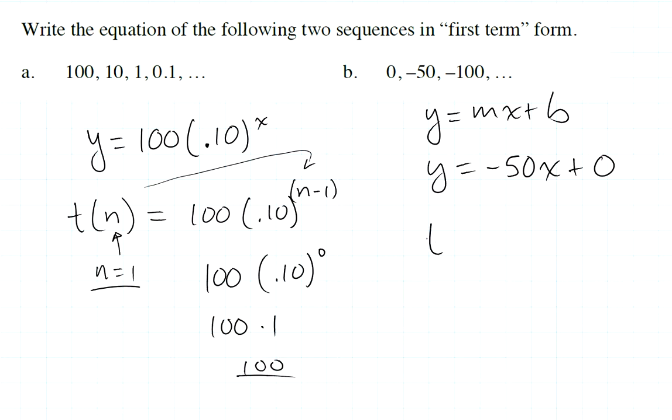If I write this in first term form, when N is 1, it should produce a value of 0. And you can see it won't. If I put in X as 1, it's going to give me negative 50. So if I want to shift this over to first term form, it's going to be that negative 50 again. But this time, N minus 1. So you can see here, when I want to go to my first term form, instead of using X, I just shift it to N minus 1. Same thing on the other side. Instead of writing an X, I shift that to N minus 1. So I just shift it back 1, and it makes the adjustment.